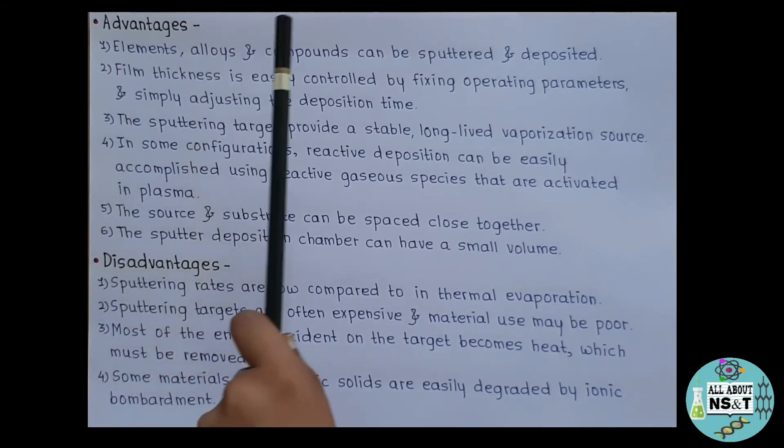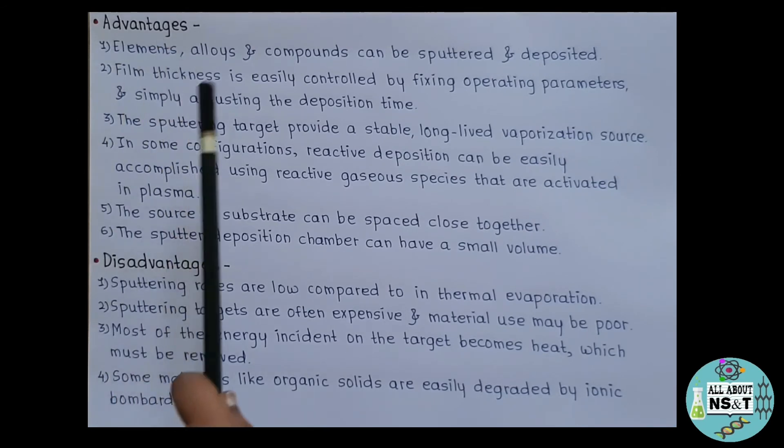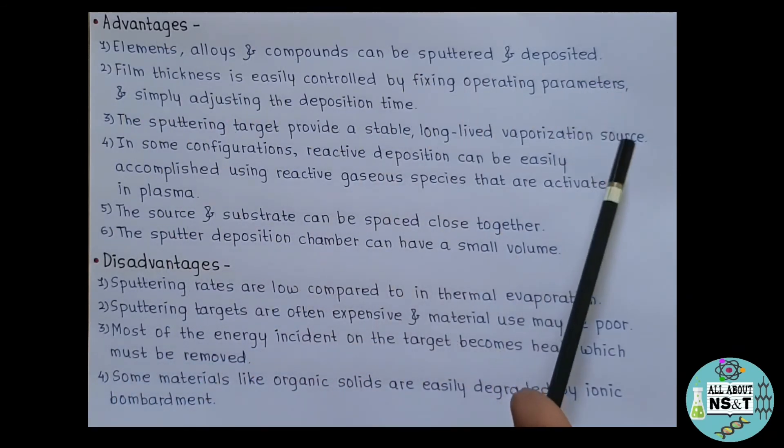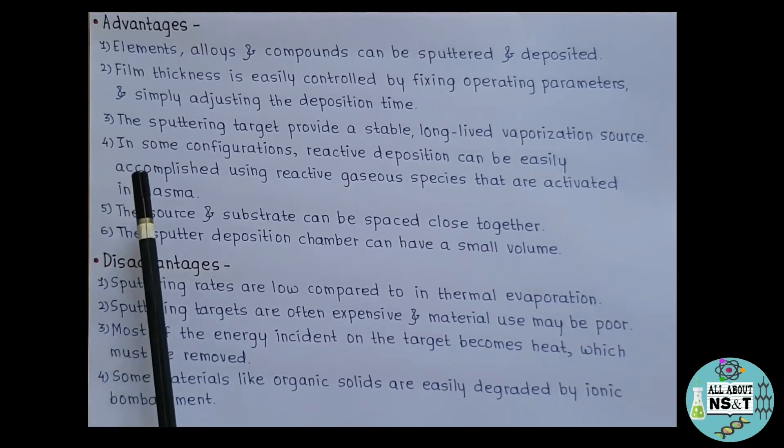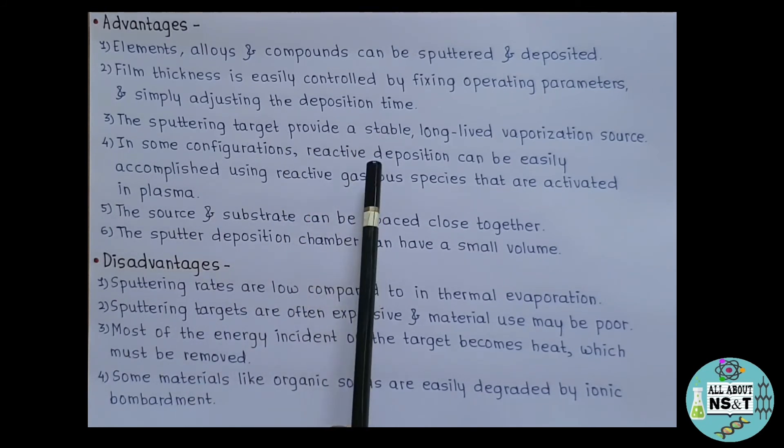Elements, alloys and compounds can be sputtered and deposited. Film thickness is easily controlled by fixing operating parameters and simply adjusting the deposition time. That means the thin film or the thickness of the thin film can be easily controlled by just varying the operating parameters or just optimizing the parameters. Third, the sputtering target provides a stable, long-lived vaporization source.